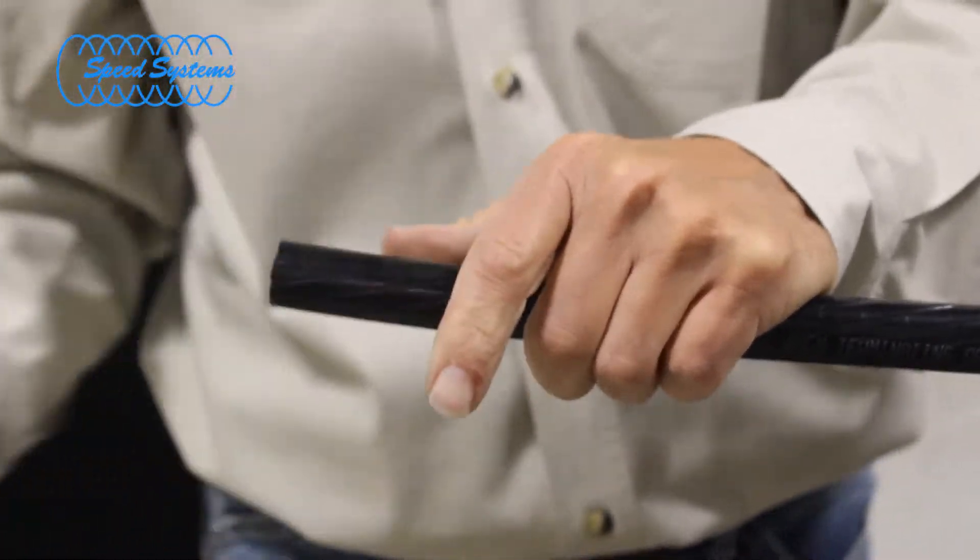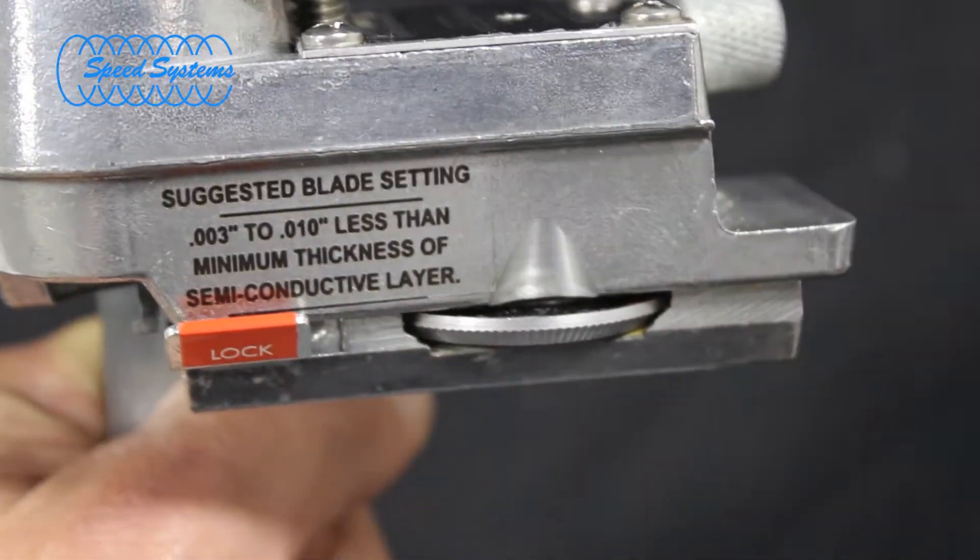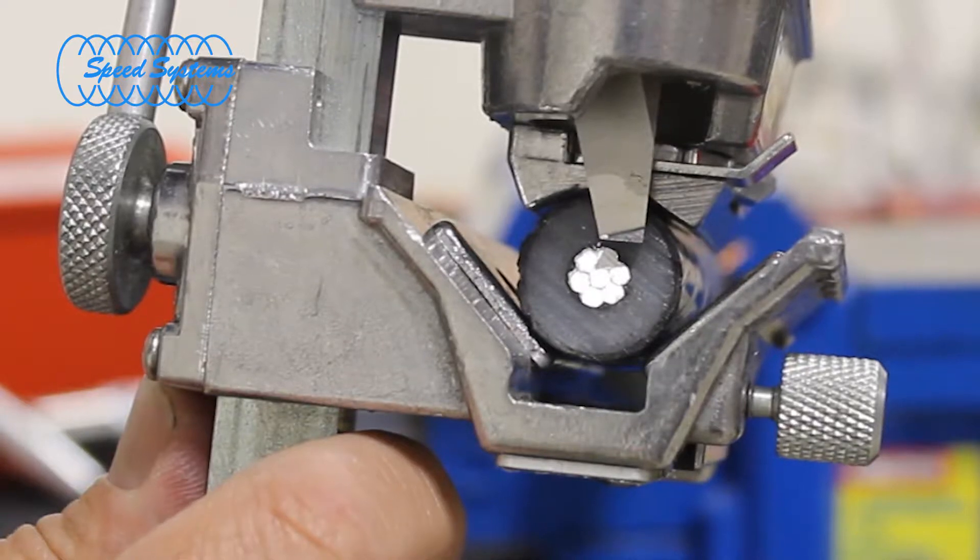Fully retract the Semi-Con scoring blade. Move the lock to the stripping position and extend the stripping blade. Set the blade depth so the blade misses the conductor by approximately 1/16th of an inch.